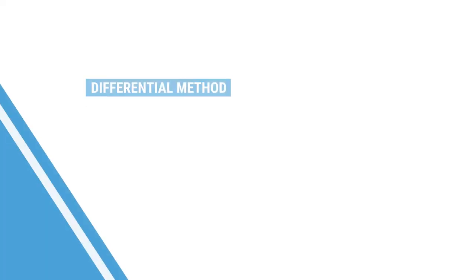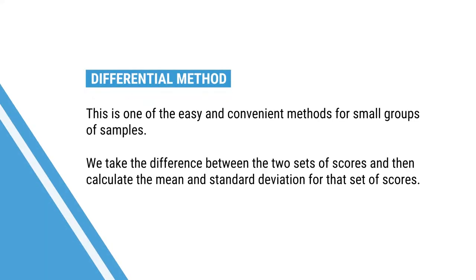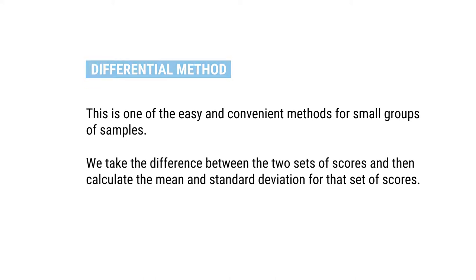Let us now consider another method — the Differential Method. This is one of the easy and convenient methods for a small group sample. We take the difference between two sets of scores and then calculate the mean and standard deviation for that set of difference scores. Let us examine the concept with the help of an example.